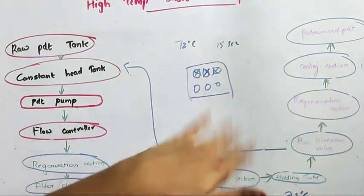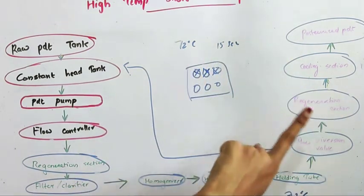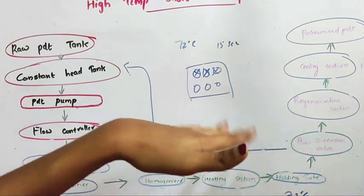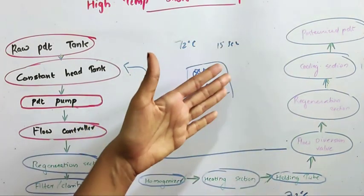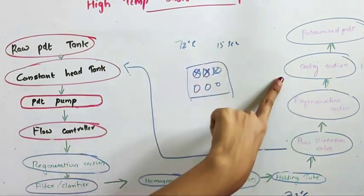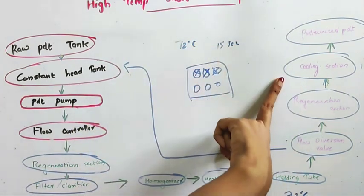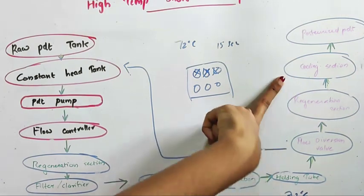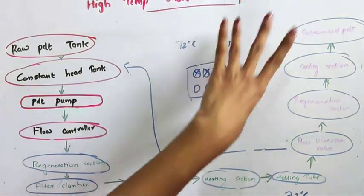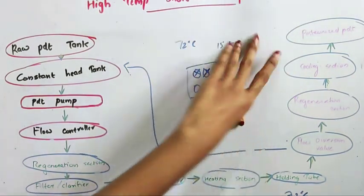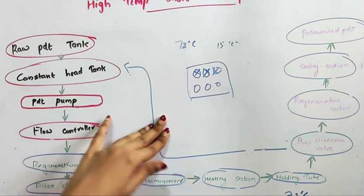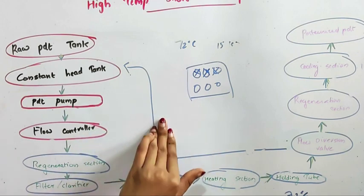From the regeneration section, the milk reaches the cooling section, because it is not possible to cool the milk to a very low temperature in the regeneration section alone — we can cool it only up to a certain extent there. The remaining cooling is carried out in the cooling section. From the cooling section, you obtain the pasteurized product. This is the flow diagram for HTST pasteurization.